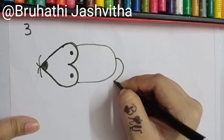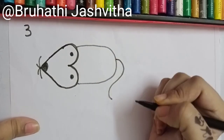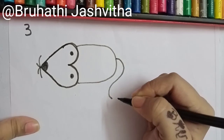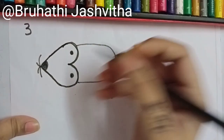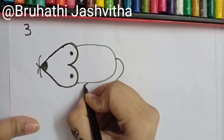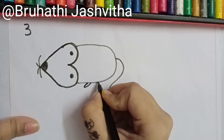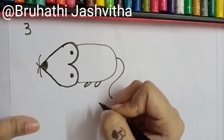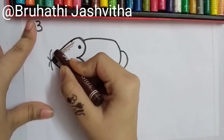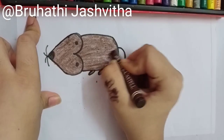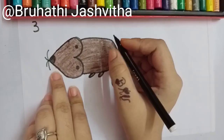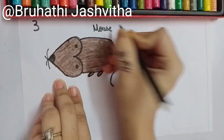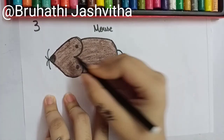After some time, the ice cream started dripping down. Can you guess what it is? Yes, it is a mouse. So let's make the legs of it. Now let's color it. Spell its name: M-O-U-S-E. Mouse.